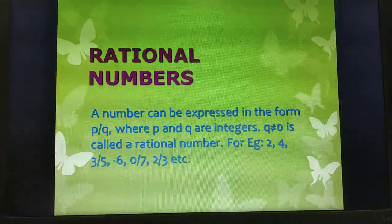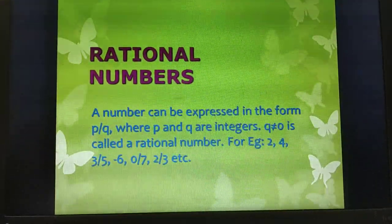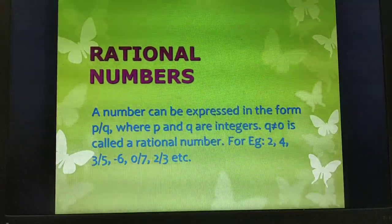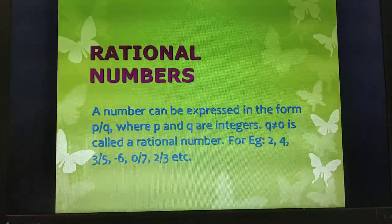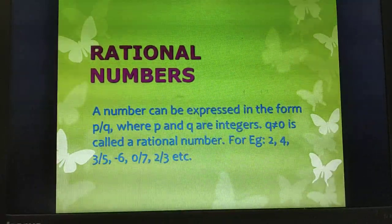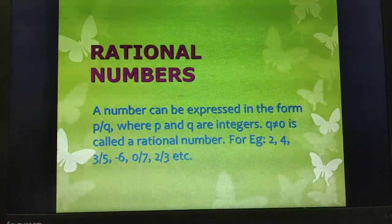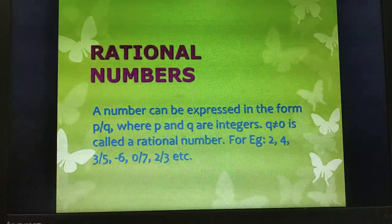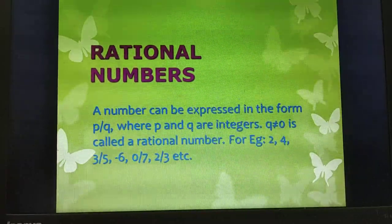Rational Numbers: A number that can be expressed in the form P/Q, where P and Q are integers and Q is not equal to 0, is called a rational number. For example, 2, 4, 3/5, -6, 0/7, 2/3, etc.